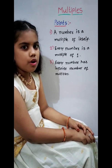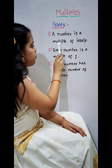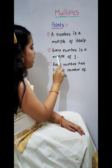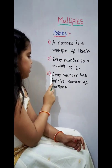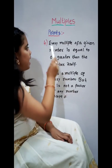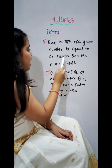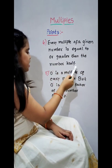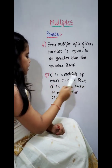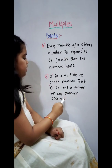Some important points of multiples. First: a number is a multiple of itself. Second: every number is a multiple of 1. Third: every number has an infinite number of multiples. Fourth: every multiple of a given number is equal to or greater than the number itself. Fifth: 0 is a multiple of every number, but 0 is not a factor of any number except 0.